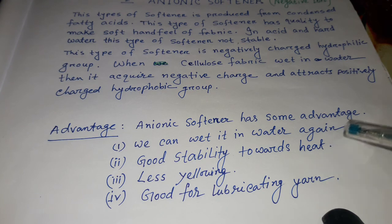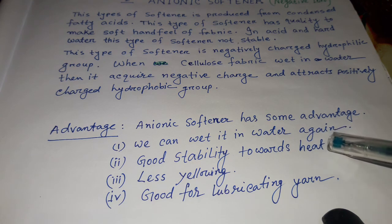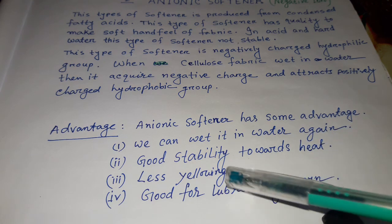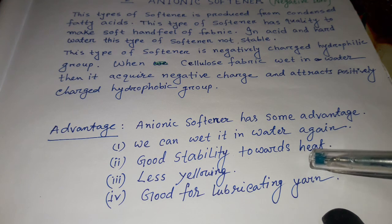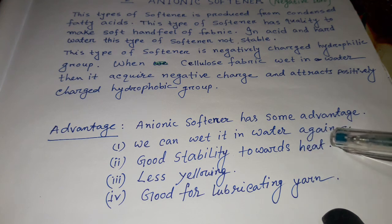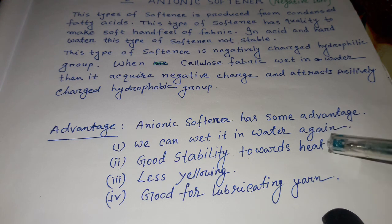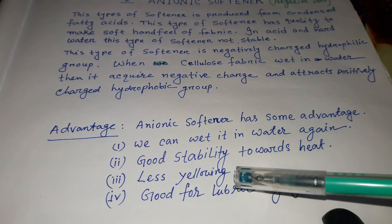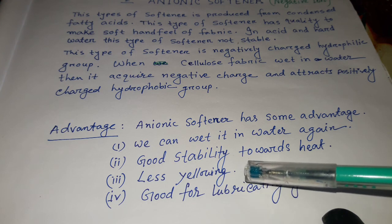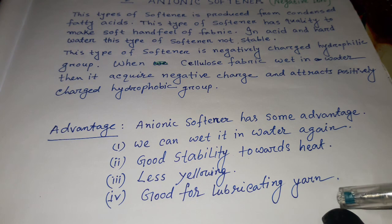Anionic softener has some advantages. It can be washed in water. It has good stability towards heat, meaning it has a tolerable quality to heat. There is less yellowing effect. It is also good for lubricating yarn.